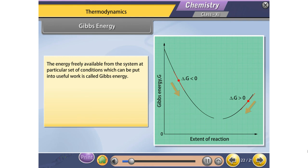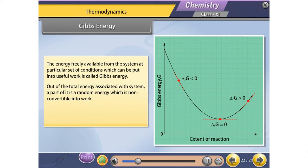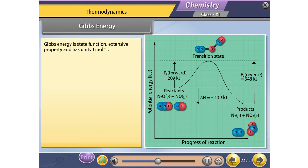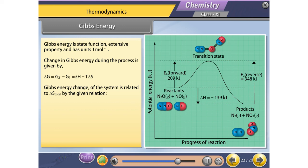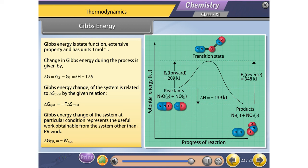The energy freely available from the system at a particular set of conditions, which can be put into useful work, is called Gibbs energy. Out of the total energy associated with a system, a part of it is random energy which is non-convertible into work. Gibbs energy is represented as G = H − TS. It is a state function, an extensive property, and has units of J/mol. The change in Gibbs energy is given by ΔG = G₂ − G₁ = ΔH − TΔS. Gibbs energy change of the system is related to ΔS_total by ΔG_system = −T ΔS_total. Gibbs energy change at particular conditions represents the useful work obtainable from the system, other than PV work.